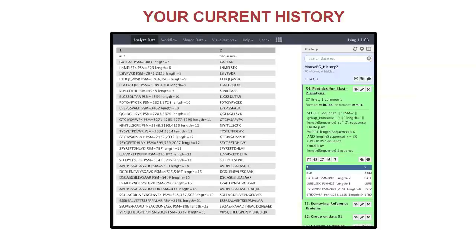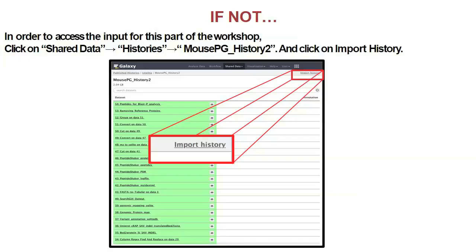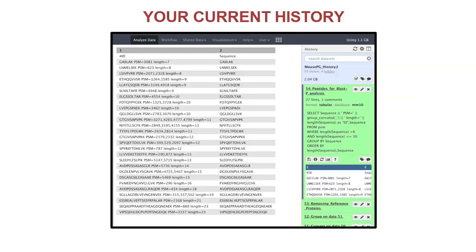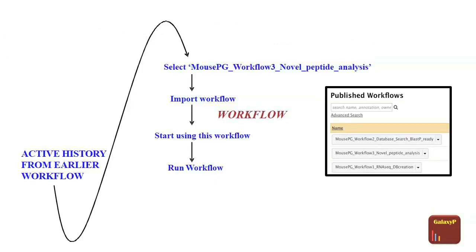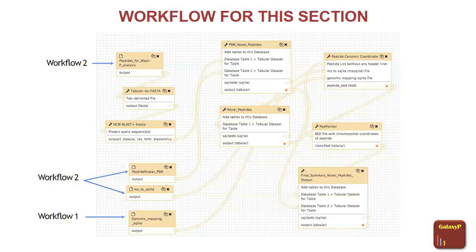The third workflow. By the end of this, your history would look like it has 54 items — outputs from each of the tools. As a backup in case your search stalled for some reason, you can always go back to that Galaxy instance and download the history for the third workflow. The third workflow takes inputs from workflow 2: the BLAST-P peptides, the PSM report from Peptide Shaker at one percent global FDR, and the MZ2 SQLite file.